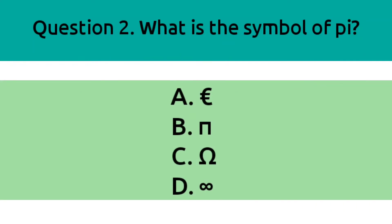Question 2. What is the symbol of pi? Option A, Option B, Option C, Option D. And the correct answer is Option B.